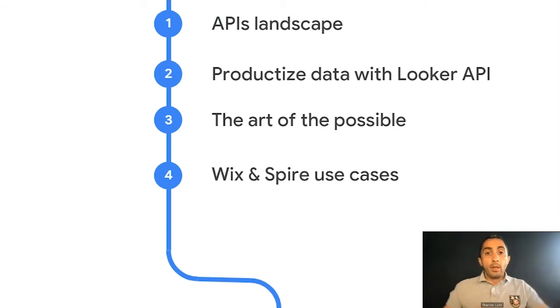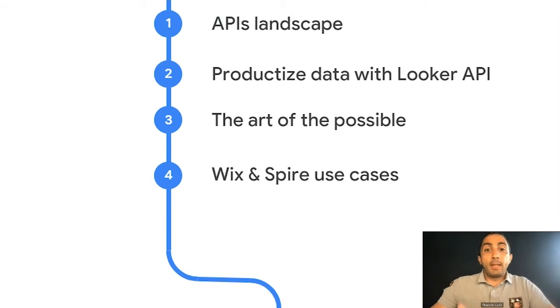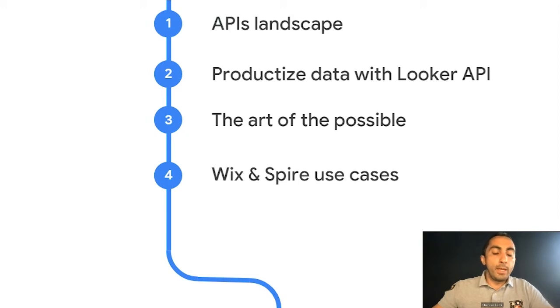We'll have some latitude around the API landscape, because it's not just about the Looker API — it's how we use all those application programming interfaces. The second topic is how you're going to productize data with the Looker API. And we also want to give you some flavors of what we've seen on the market — the art of the possible — and we'll walk you through two use cases from Wix and Spire.